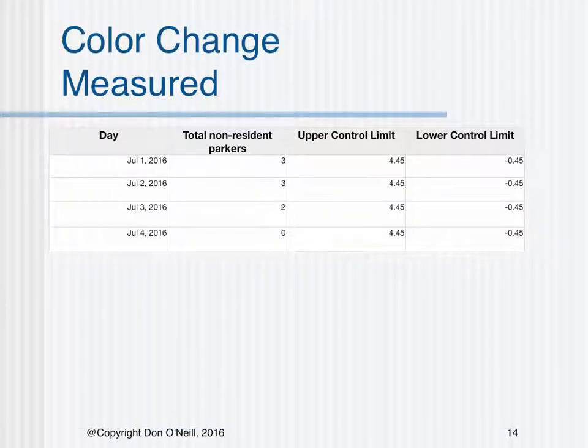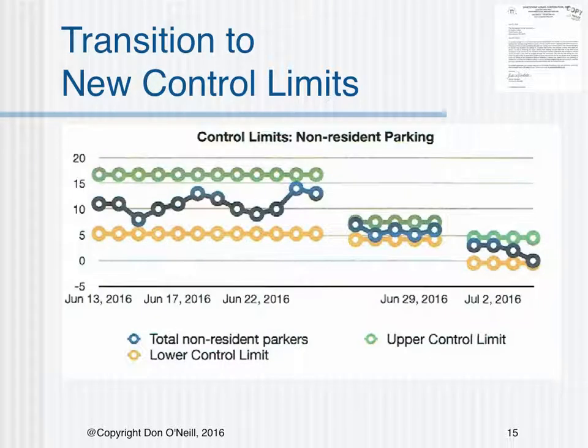The color change resulted in a measured reduction, as shown here. The transition to new control limits reflects the response to the letter and then the color change-up, and indicates that progress is being made in curtailing non-resident parking. The offenders are fewer and more predictable, reaching zero on July 4th.